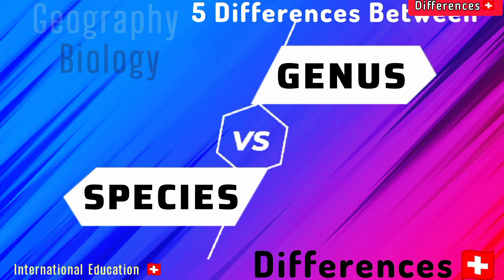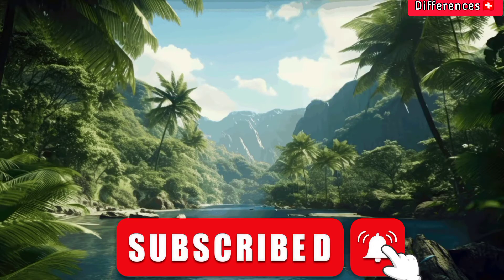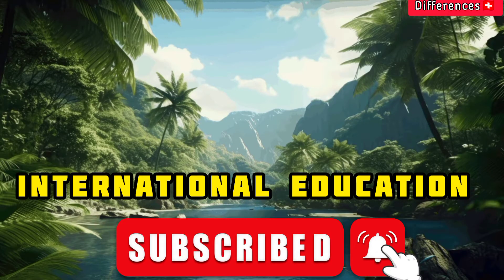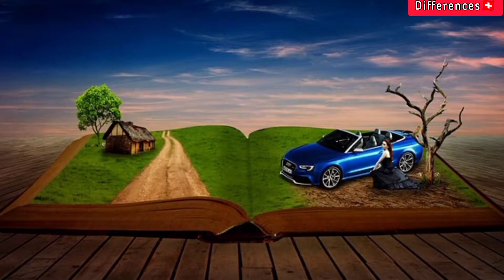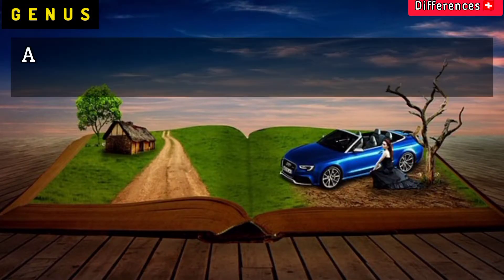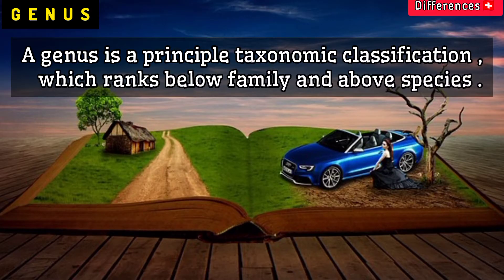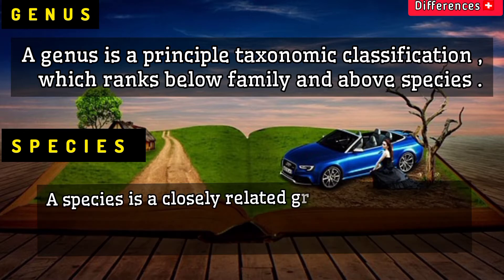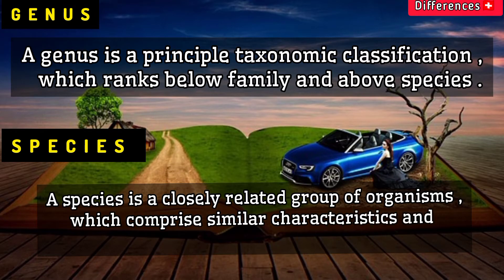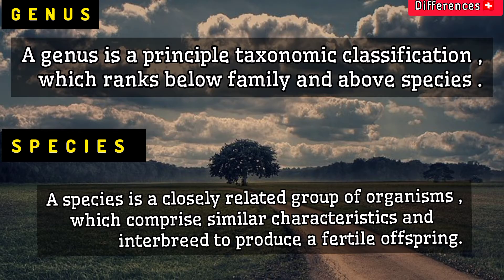In this video we will explain the difference between genus versus species. A genus is a principal taxonomic classification which ranks below family and above species. A species is a closely related group of organisms which comprise similar characteristics and interbreed to produce a fertile offspring.